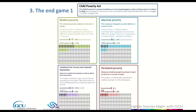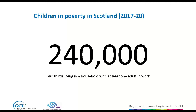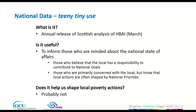National Scotland-level data gives us figures such as 240,000 children in Scotland in poverty, with two-thirds living in a household with at least one adult in work — a sense of the scale of the national challenge. This annual release from the Households Below Average Income survey tends to be released in March each year. I describe this as teeny tiny use, not that it's not at all useful — it might inform those concerned about the national state of affairs. But it doesn't really help shape local poverty actions. It just gives us a sense of the big picture.